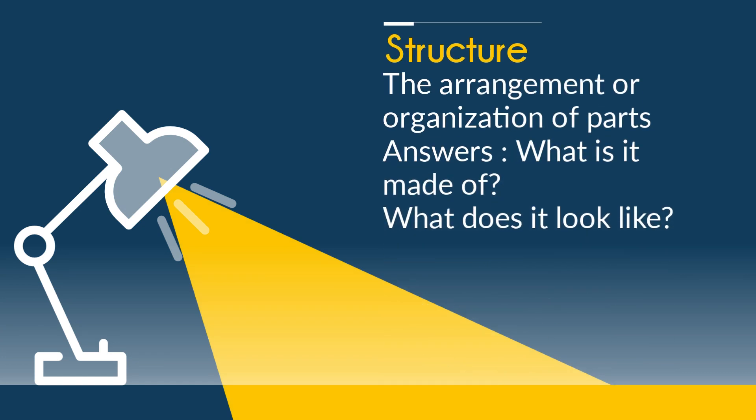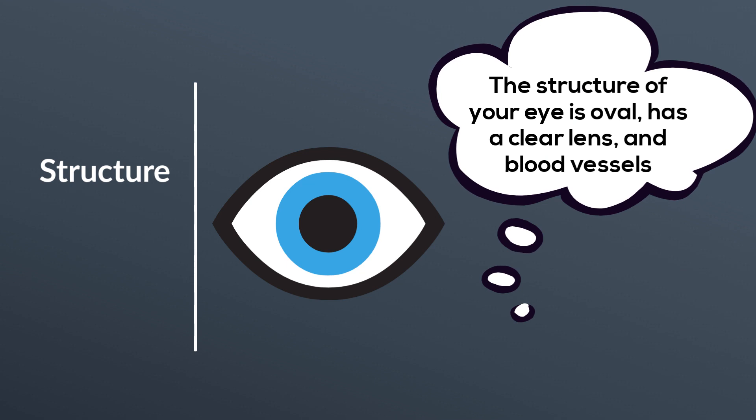Structure is the arrangement or organization of parts. It answers what is it made of and what does it look like. For example, the structure of your eye is oval. It is made of a clear lens and has blood vessels.